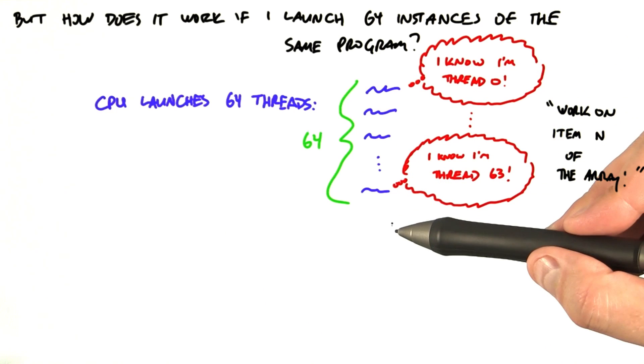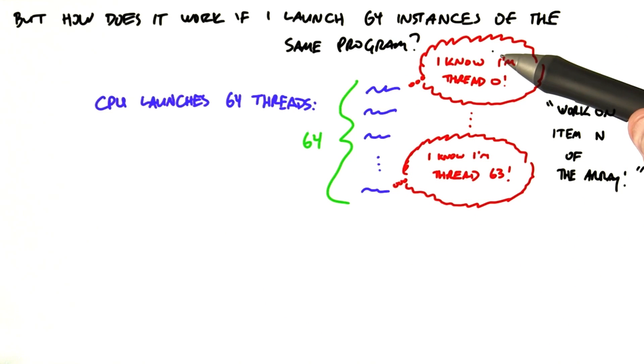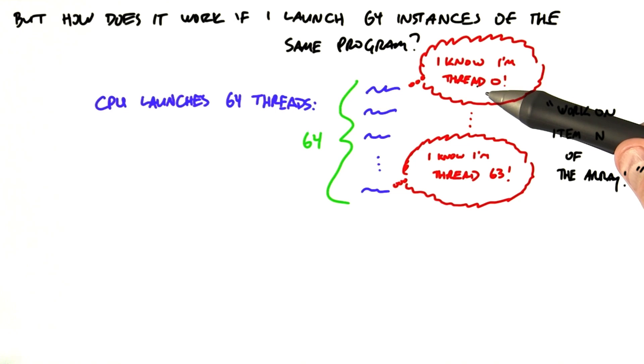So if you launch 64 threads, one of them knows it's thread 0, one of them knows it's thread 1, and so on. Then you can assign thread number n to work on the nth element of the array.